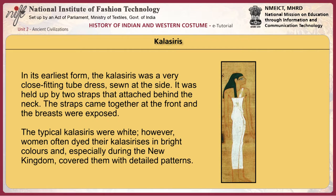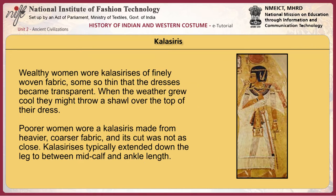In its earliest form, the kalasiri was a very close-fitting tube dress sewn at the side, held up by two straps that attached behind the neck; the straps came together at the front and the breasts were exposed. The typical kalasiri was white, though women often dyed them in bright colors, especially during the New Kingdom, and covered them with detailed patterns. Wealthy women wore kalasiri of finely woven fabric, some so thin the dresses became transparent. Poorer women wore a kalasiri made from heavier, coarser fabric. Kalasiri typically extended down the leg to between mid-calf and ankle length.